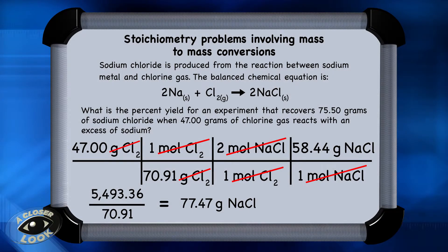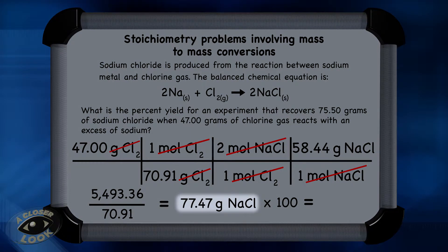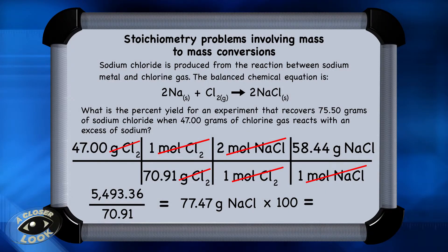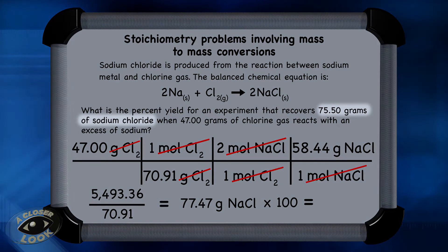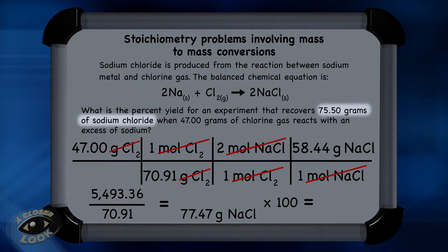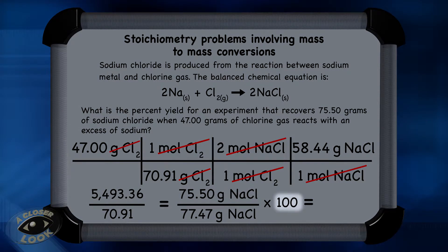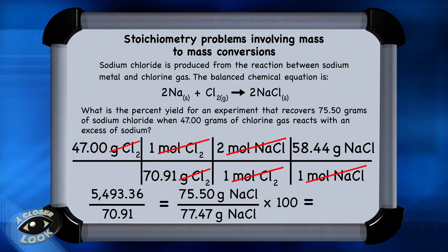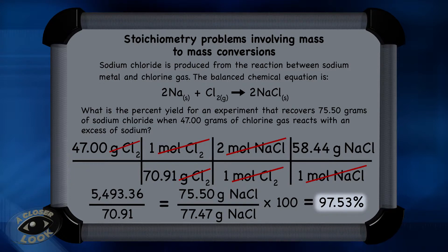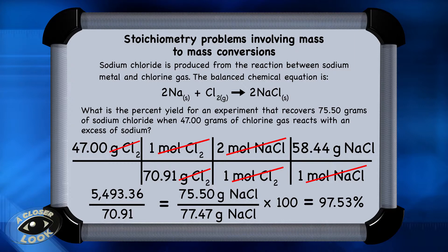The 77.47 grams is the theoretical yield. To calculate percent yield, take the ratio of the actual yield over the theoretical yield and multiply by 100. The actual yield is 75.50 grams, and the theoretical yield is 77.47 grams. So take 75.50 divided by 77.47, multiply that ratio by 100, and you find the percent yield is 97.53%, which would be pretty good if you were to actually carry this out as an investigation in the lab.